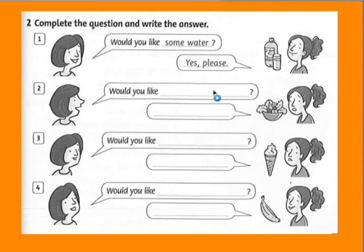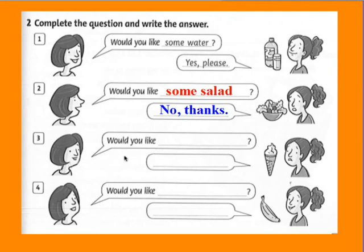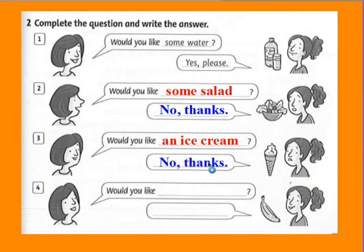Salad. Would you like some salad? The person looks sad — they don't like it, they decline. No, thanks. Number three: Would you like an ice cream? The person also has a sad face. No, thanks.